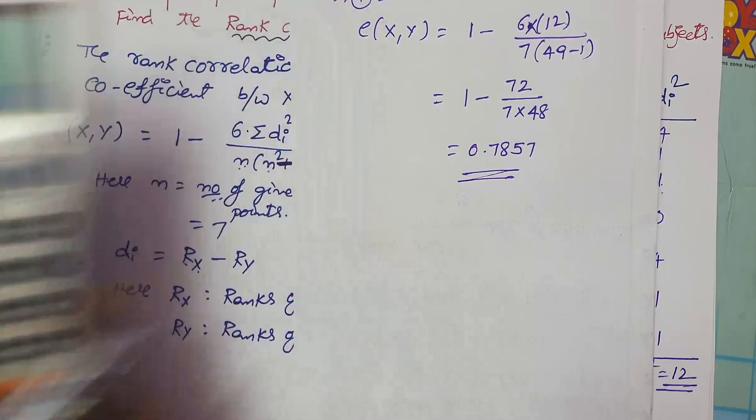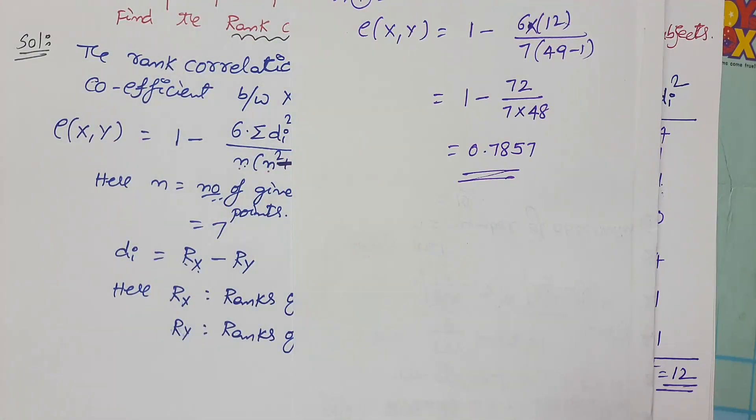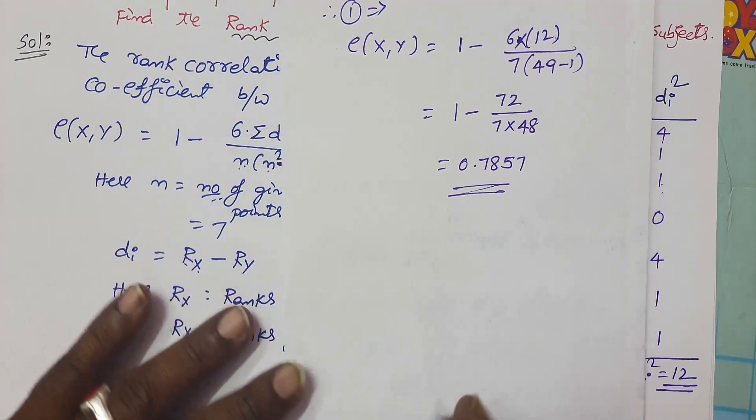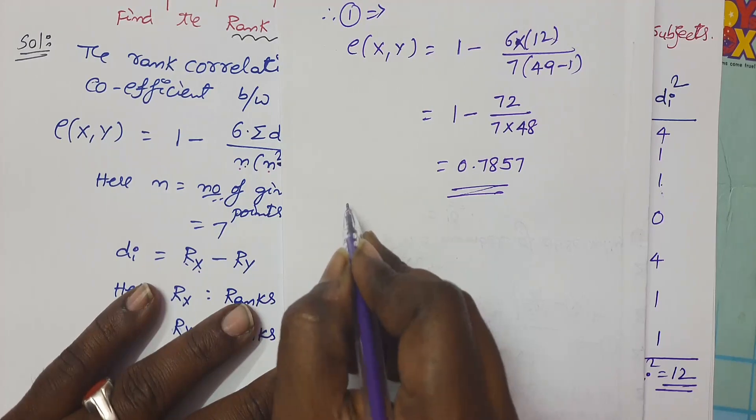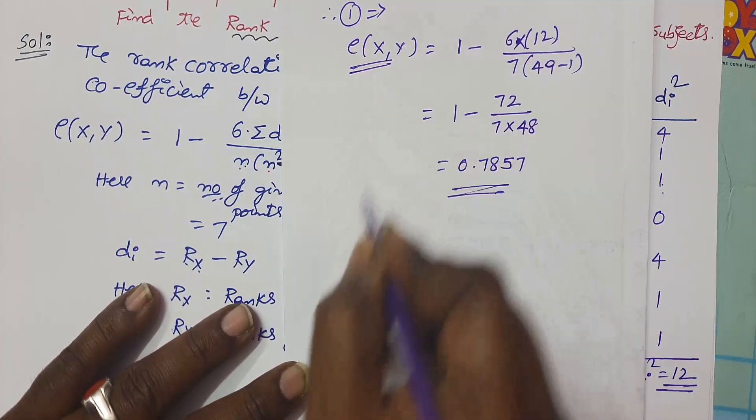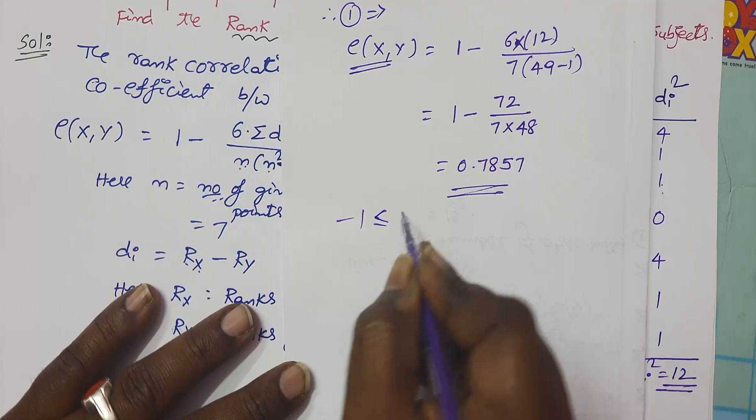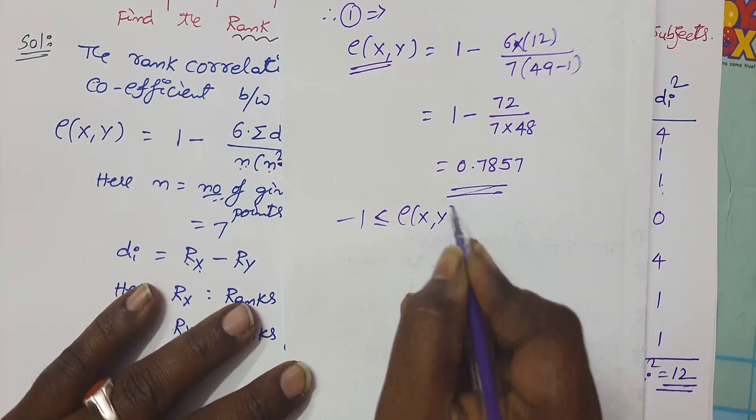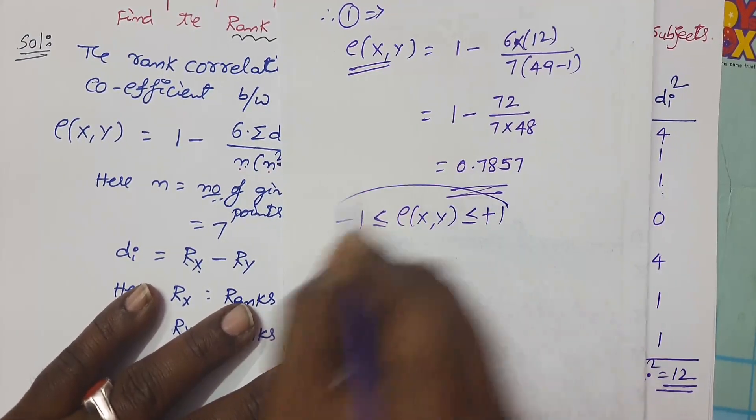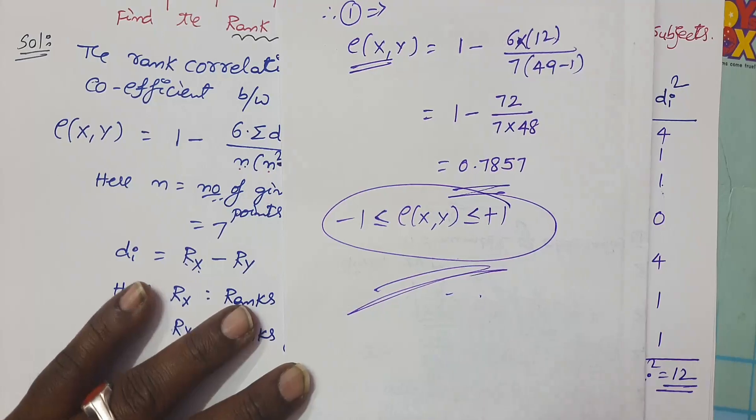In this way, we can find out the rank correlation coefficient between the two variables. Here also, rank correlation coefficient range is minus 1 to plus 1. So rank correlation coefficient should also lie between minus 1 and plus 1. Don't forget it in your examinations.